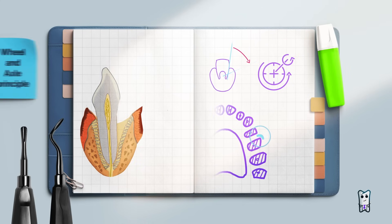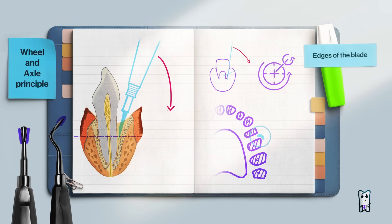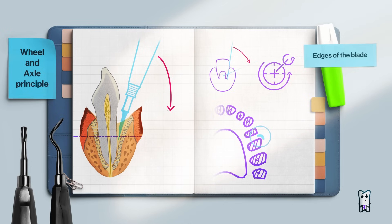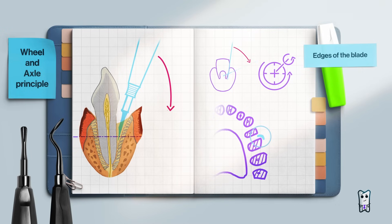Next is the principle of the wheel and axle. Key players in this principle are the edges of the blade with the straight elevator and the tip with the curved ones. When you are inserting the elevator, its long axis should be close to parallel to the long axis of the tooth.